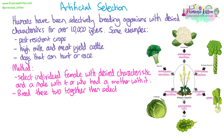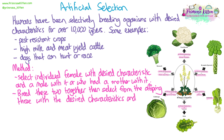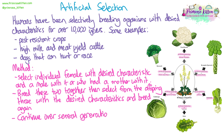Then you select from their offspring the best individuals that have the characteristics you want to see, and breed them together. You continue this over several generations — it's not going to happen straight away. You need to repeat this over several generations until you have the majority of your offspring coming out with the characteristic you would like them to have.